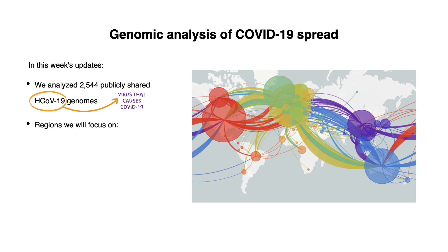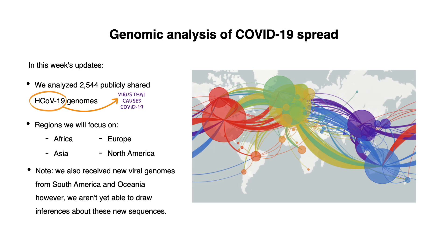In this report, we will focus on Africa, Asia, Europe, and North America. We do want to note that we have received new viral genomes from South America and Oceania. Most of these new samples are scattered across the tree and grouped with samples collected in other regions of the world. Without more contextual data, however, we aren't yet able to draw inferences about these new sequences.